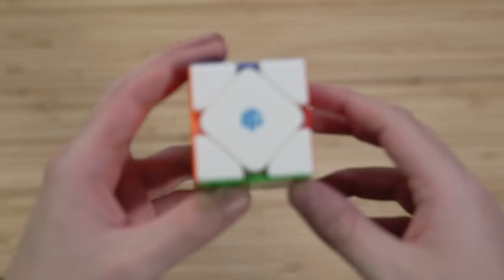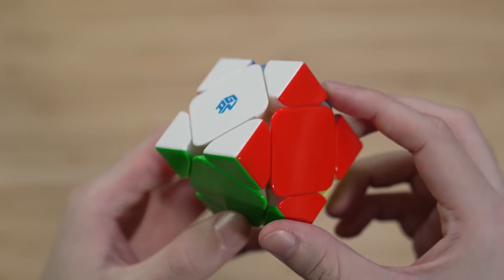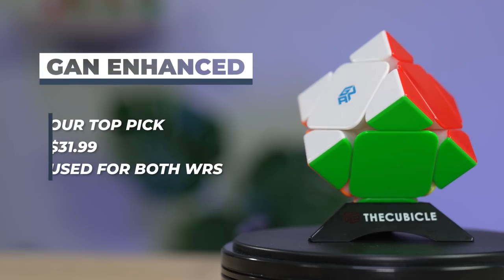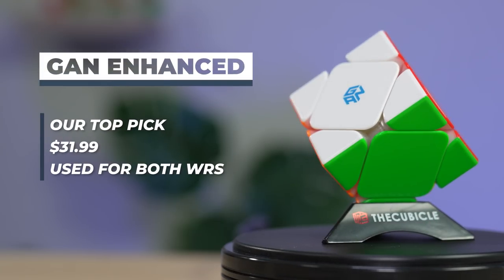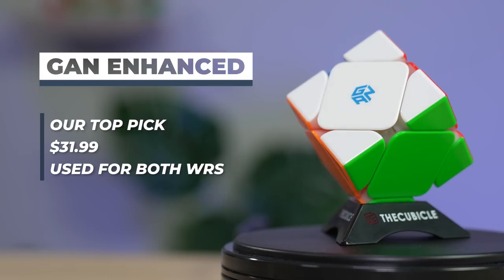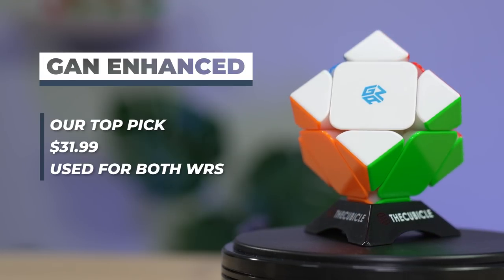Alright, I'm back. I am not a very good Skewb solver, but I'm already here, so might as well talk about it. The Gan Enhanced came out quite a while ago, but I still think it's the best option. It's really fast, smooth, stable, and it's great out of the box. This is also the only one I have, again, because I think it's the best. However, it is pretty expensive,